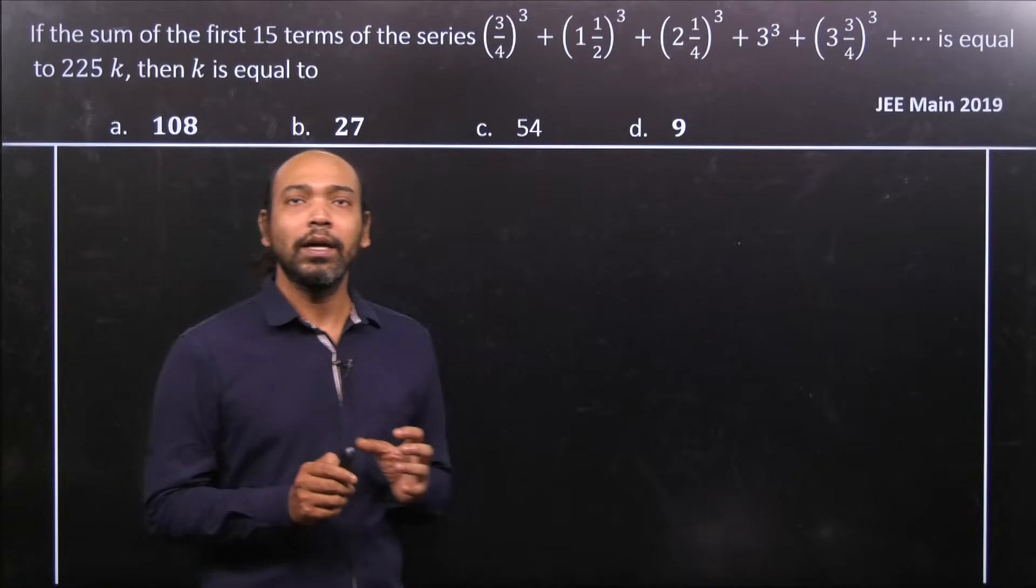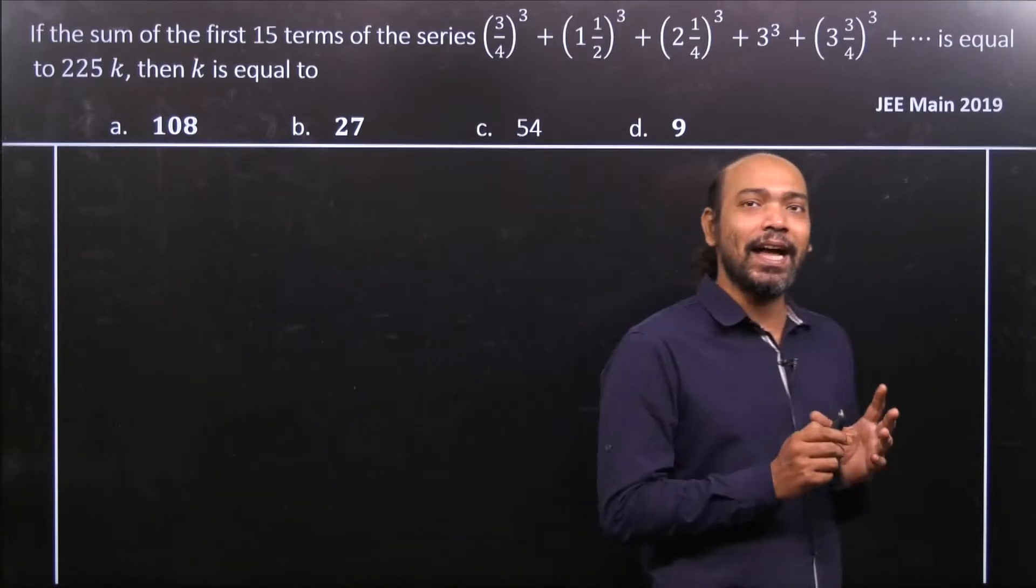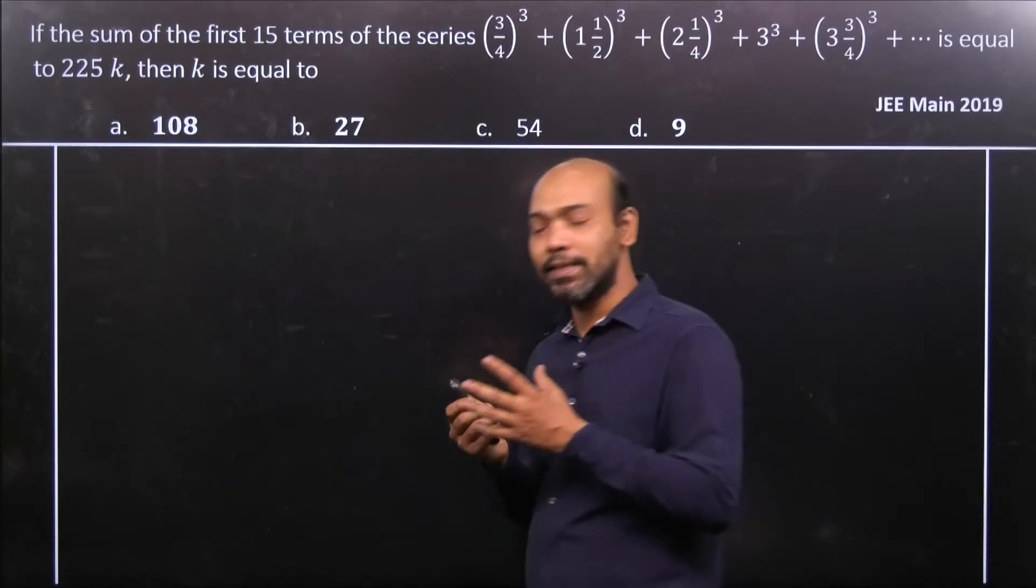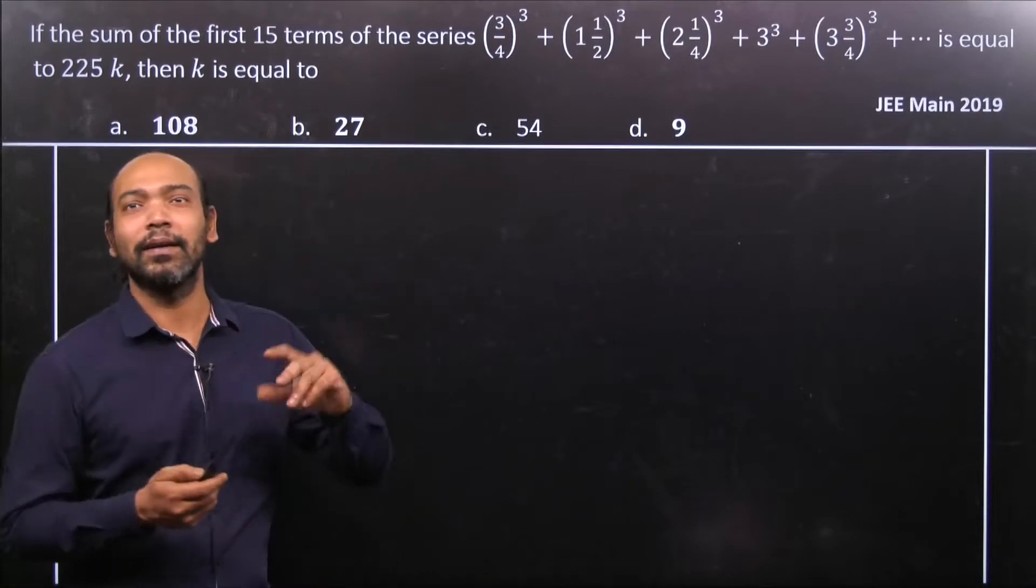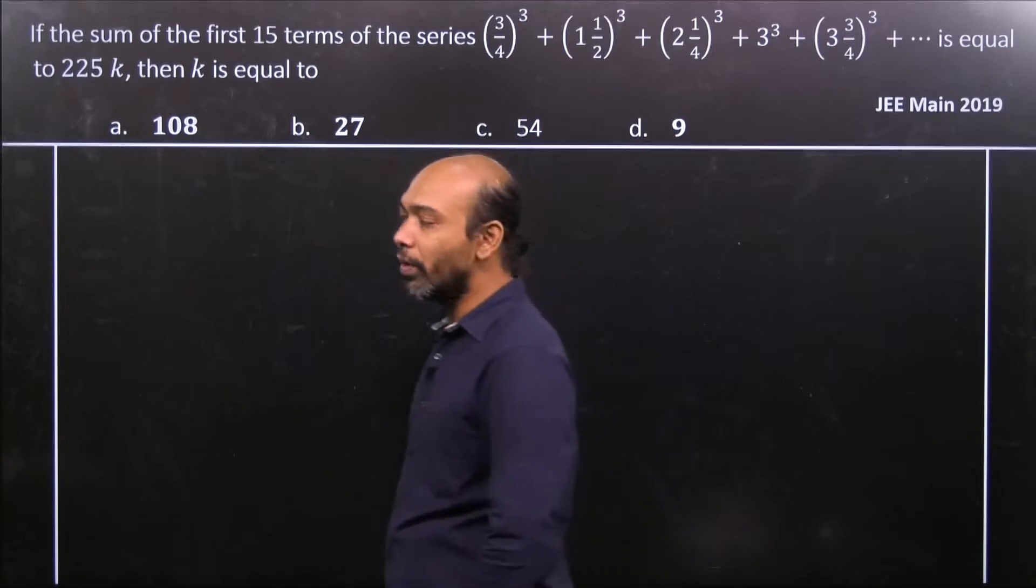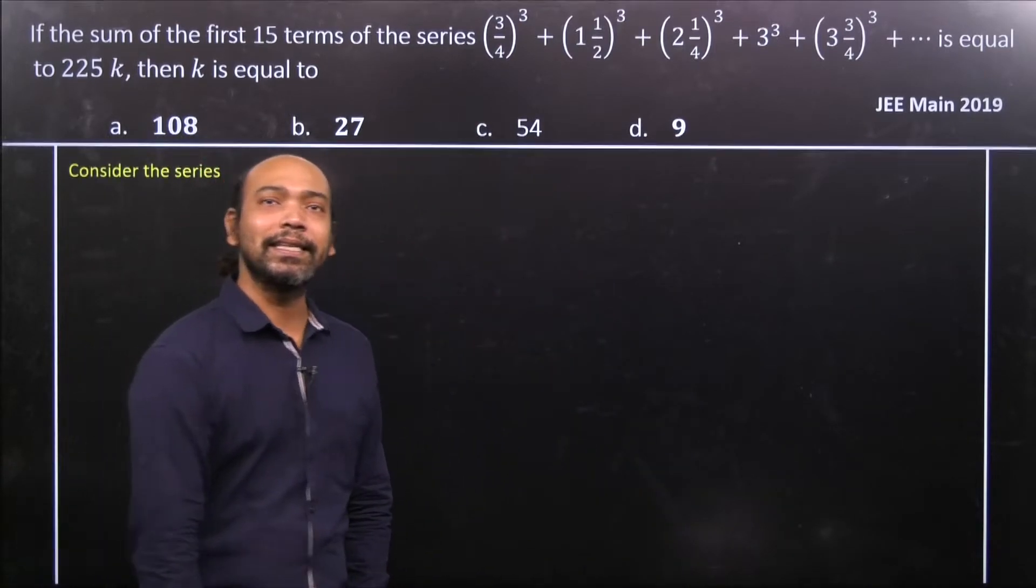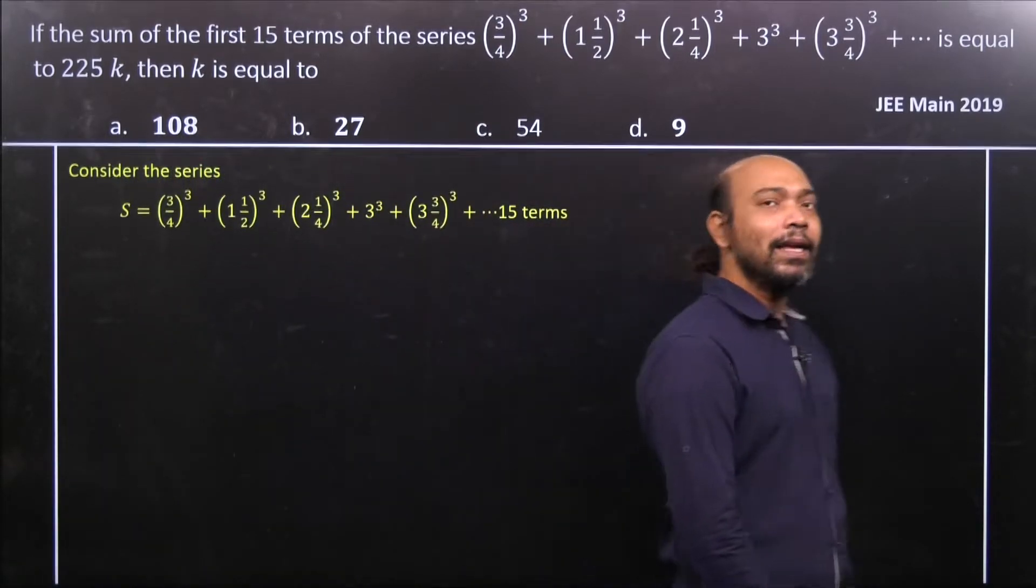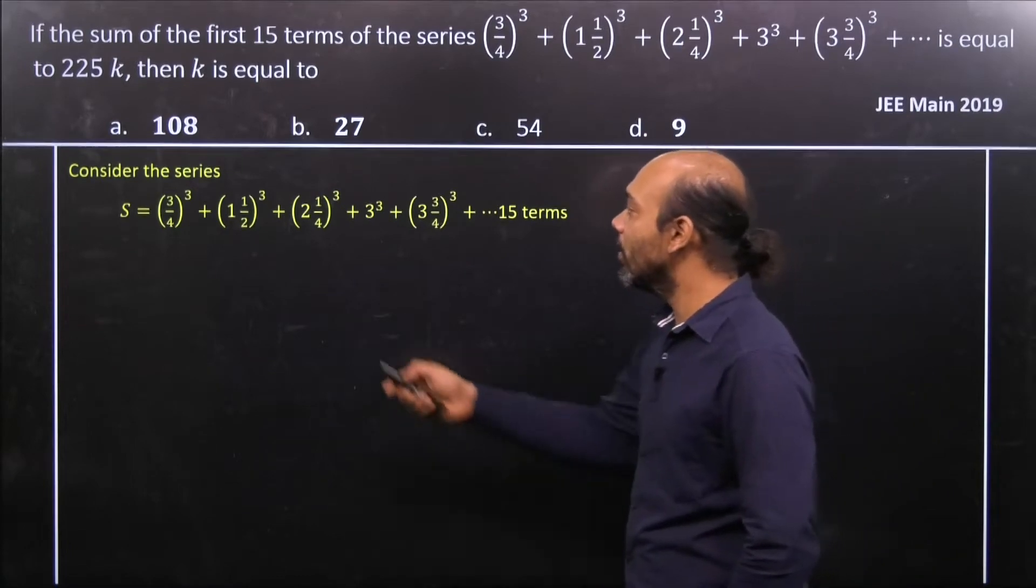That's the easiest way to solve this kind of problem. So here first we go ahead and consider the sum. Now see that in that particular sum all the terms are actually in mixed fraction form and it is difficult to understand the mixed fraction form.